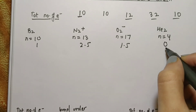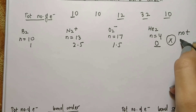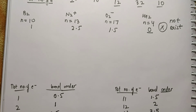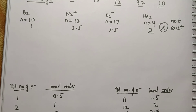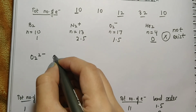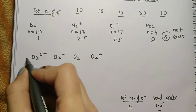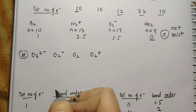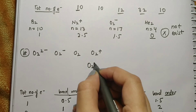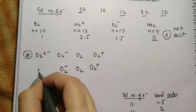If the bond order comes to be 0, then the species will not exist in the free state. Now we have seen questions like: arrange the following molecules in increasing or decreasing bond order. For example, if we are given O2 2−, O2−, O2, and O2+ — the species which have a positive charge will have more bond order, meaning O2+ has more bond order, then the neutral one, then the less negative, then the more negative.